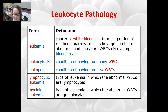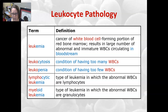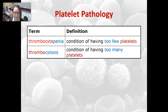Lymphocytic leukemia is a type of leukemia in which the abnormal white cells are lymphocytes. Myeloid leukemia is a type of leukemia in which the abnormal white cells are granulocytes — such as the neutrophil, eosinophil, or basophil line, or a mix.